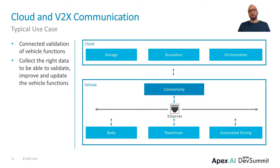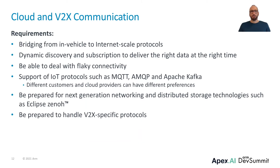Coming back to our example, the automated driving domain controller is connected to an Ethernet backbone that also includes an ECU which provides connectivity to the cloud. This can be used for connected validation, where in-vehicle data is collected and used to improve and update the vehicle functions. With software over-the-air updates, it is possible to update specific nodes of the Sense-Plan-Act pipeline. The connectivity could also be used for shadow validation, where a new version of a node runs in parallel to the current active one — its outputs are not used for controlling the car, but are collected and sent for validation to the cloud. This means that bridging from in-vehicle protocols like SOME/IP or DDS to Internet-scale protocols is needed.